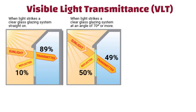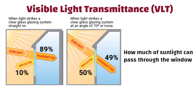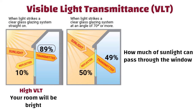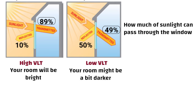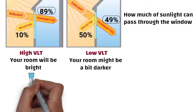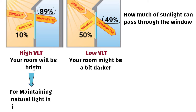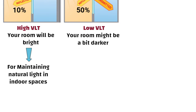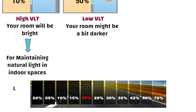Visible Light Transmittance — VLT. Visible light transmittance is how much sunlight can pass through the window. If your window has a high VLT, a lot of sunlight can come in and your room will be bright. But if it has a low VLT, not much sunlight can come in and your room might be a bit darker. High VLT is desirable for maintaining natural light in indoor spaces. It is expressed as a figure between 0, meaning no light, and 100, meaning all light.